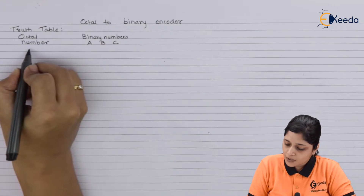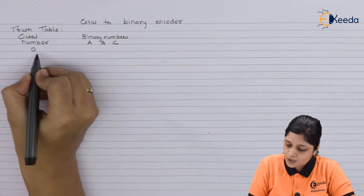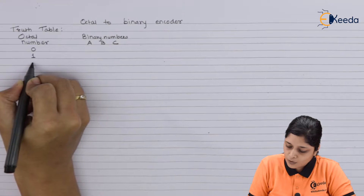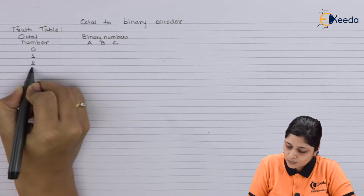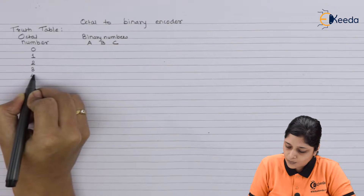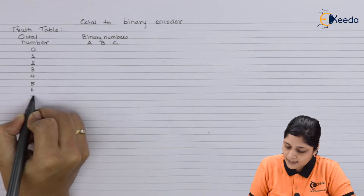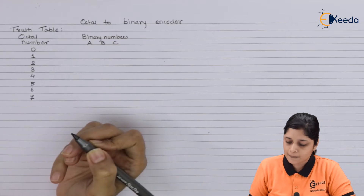We have octal numbers from 0 to 7. So we will write here: 0, 1, 2, 3, 4, 5, 6, and 7.